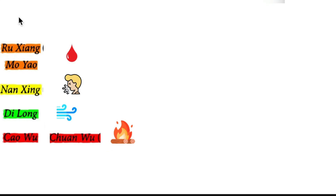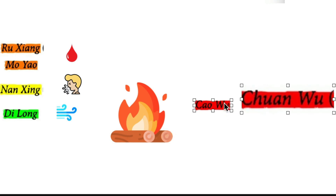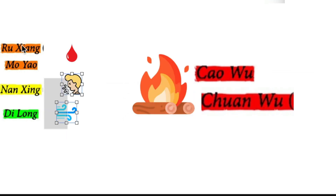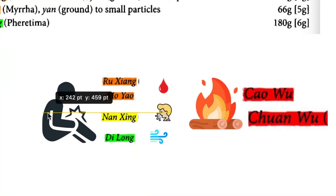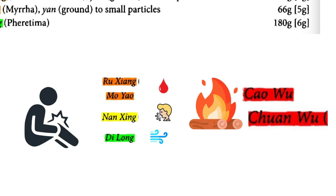In the composition of Xiao Huo Lo Dan, Chuan Wu and Jia Wu are doing most of the work — they are the main characters. The others — Di Long, Nan Xing, Ru Xiang, and Mo Yao — are the sidekicks for pain. So Xiao Huo Lo Dan treats pain by warming and opening the channel, with invigorating blood herbs, phlegm-removing herbs, and wind-releasing herbs.